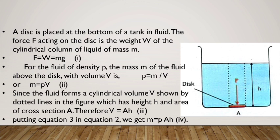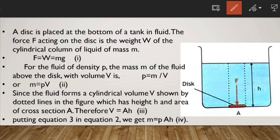Now we derive the expression for liquid pressure. Looking at the figure, we have a container. A disk is placed at the bottom of a tank in fluid. The force F acting on the disk is the weight W of the cylindrical column of liquid of mass m.